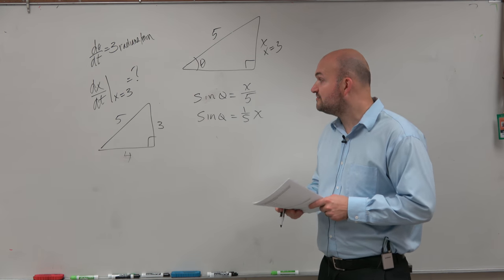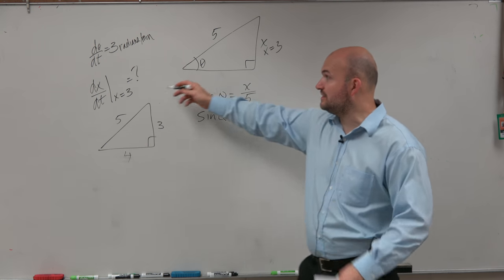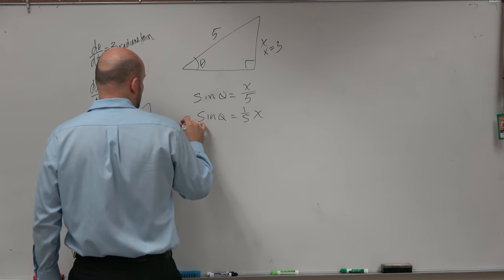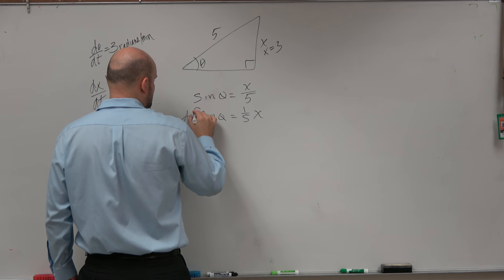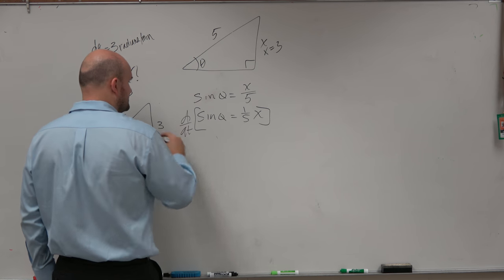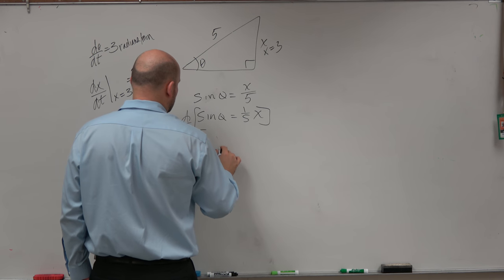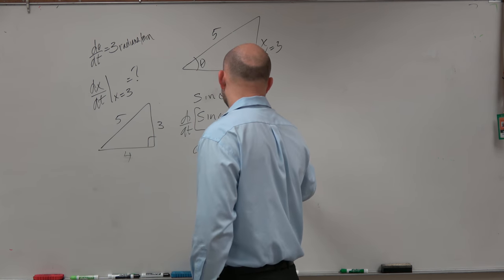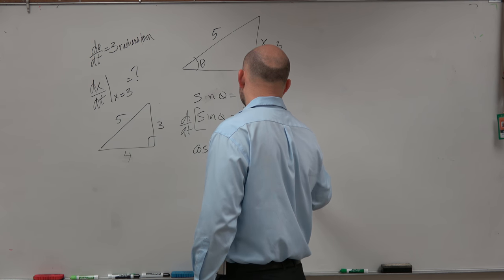So if we know that that is 4, that's important, because again, we need to incorporate d theta dt. So we know we're going to differentiate this equation with respect to t. When we do that, we have cosine of theta d theta dt is equal to 1 5th dx dt.